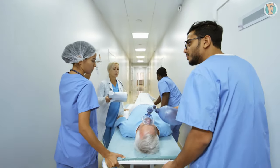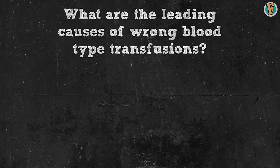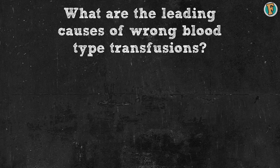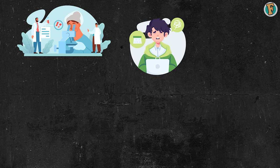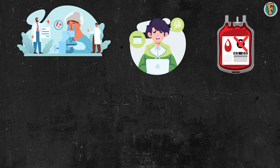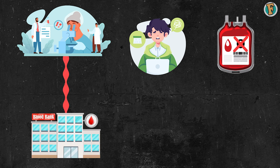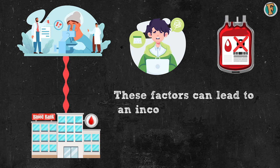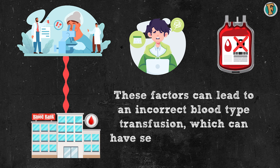So what are the leading causes of wrong blood type transfusions? The most common cause is human error, where a healthcare professional incorrectly identifies the patient's blood type and mistakenly transfers the wrong blood. Another cause is clerical errors, where the wrong blood type is entered into the patient's chart, leading to an improper blood transfer. A third cause is incorrect labeling of the blood bag, where the wrong blood type is identified on the bag. Finally, it can occur due to miscommunication between the blood bank and the healthcare professional. These factors can lead to an incorrect blood type transfusion with severe consequences for the patient.